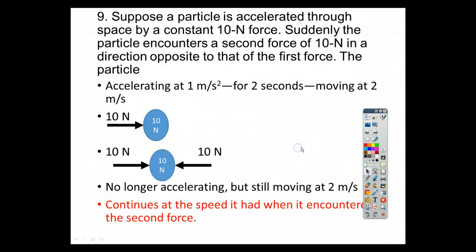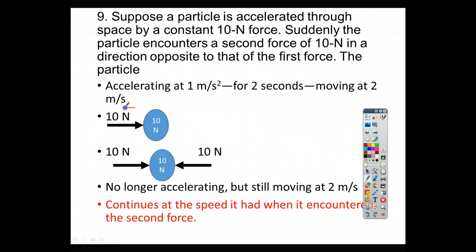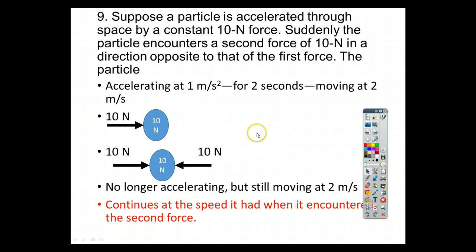Next question, number 9. So, suppose a particle is accelerated through space by a constant 10 newton force. So, here's that constant 10 newton force. Suddenly, it experiences another 10 newton force. If it's already moving at two meters per second, we know that in the next second it would go up to three meters per second. But here, at two meters per second, we get this other force. It will not stop. Instead, it will continue moving at that two meters per second until it encounters another force.